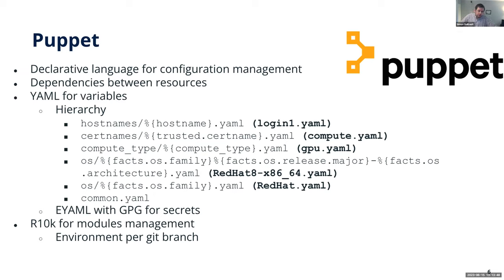All variables are in YAML. We have a multi-level hierarchy: the top level is hostname-specific and applies only to one node. Then we have layers like compute.yaml for general compute config, a compute-type level for GPU nodes, and an OS level — since we support both CentOS 7 and Rocky 8, we have separate config files for each. Finally, in common.yaml we have everything common across the cluster, like management server IP addresses used to configure firewall SSH access.